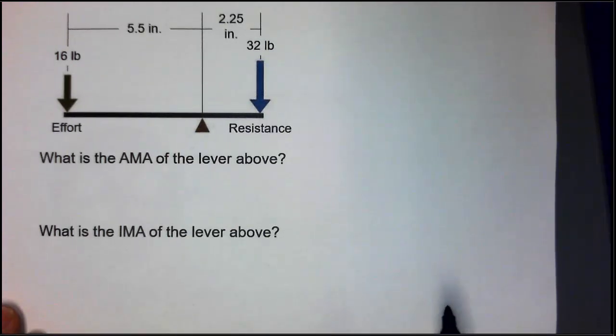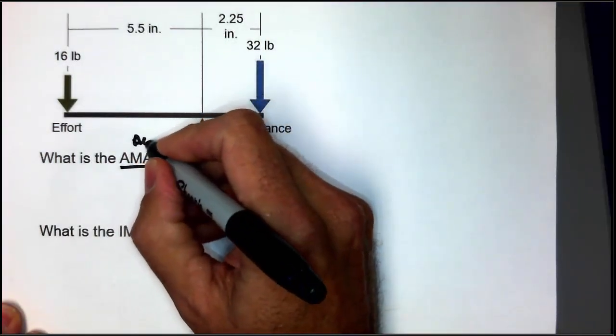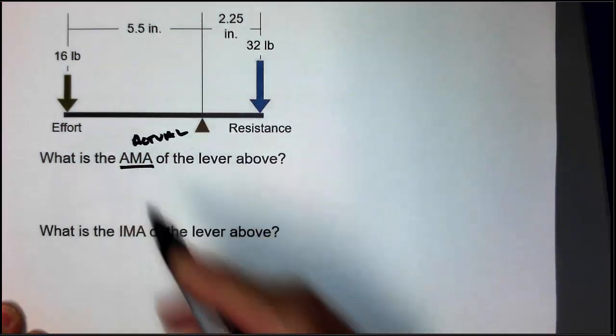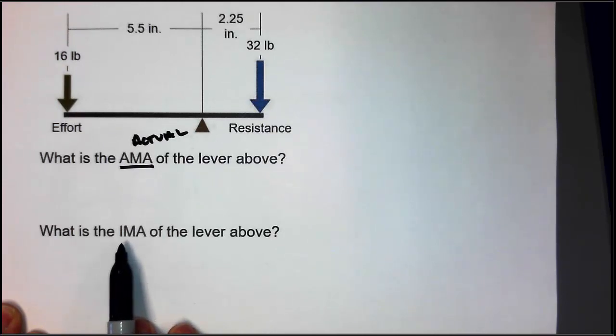So, first of all, what's AMA? AMA is defined as the actual mechanical advantage. And then we're going to find the IMA, which is the ideal mechanical advantage.